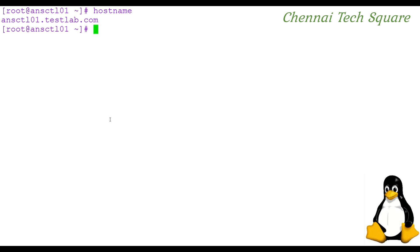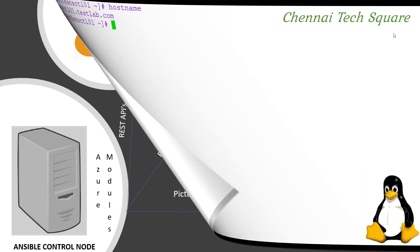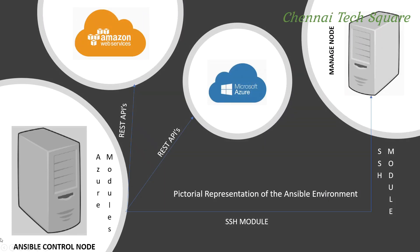We are going to see the lab setup that we are going to create for Ansible. There will be a VM called the Ansible control node, in which the Ansible application will be installed, and the servers that we manage using Ansible are called managed nodes. These can be either Windows, Linux, or Unix operating systems. The communication between the control node and the Unix managed nodes will happen through the SSH module.